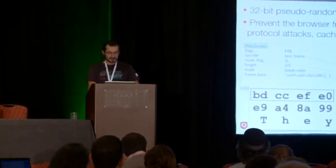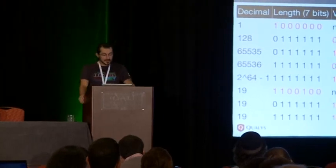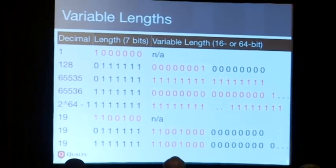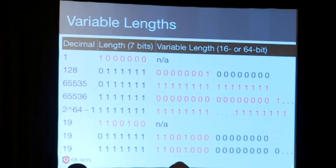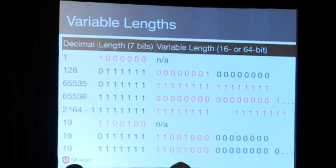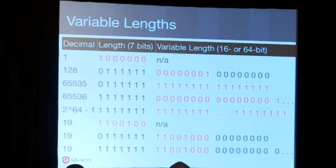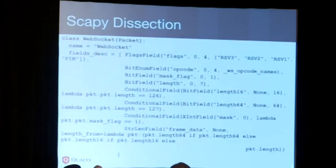The masking doesn't add any security to the data frame — it's just scrambling data. The length field can be as small as 7 bits or as long as 64 bits. The last three rows on the screen show the possibility of representing the same length value in three different ways, and that may provide entropy for a covert channel — it could be used to establish a covert channel.